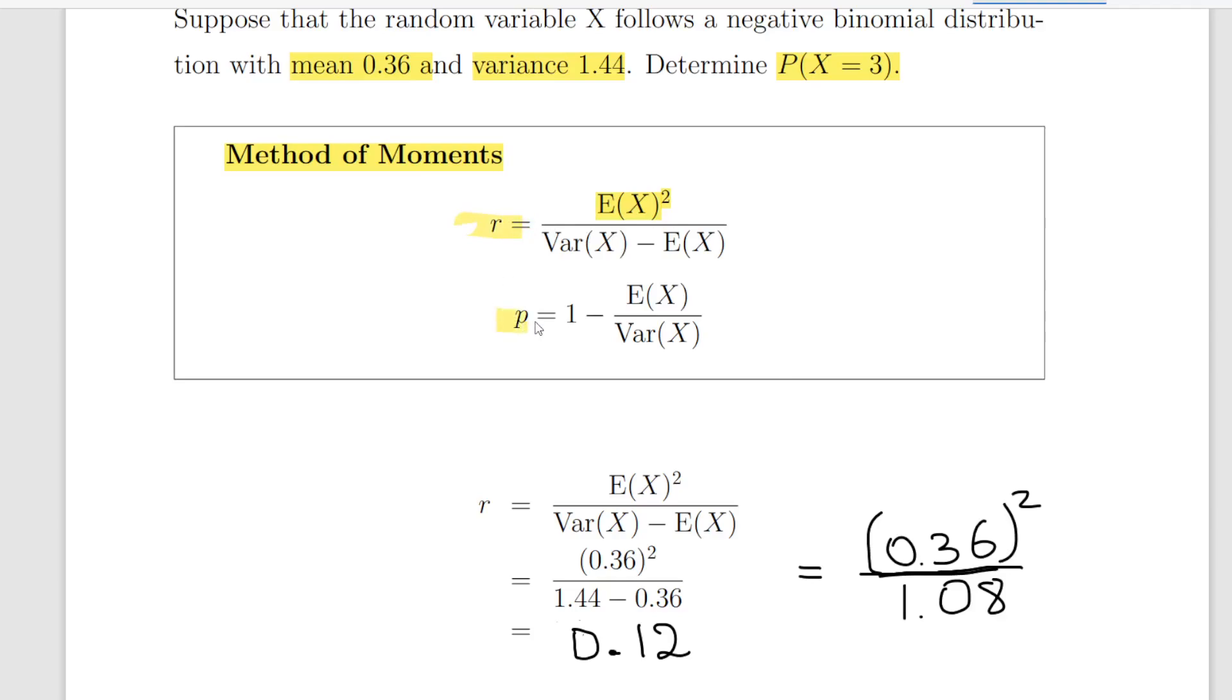We're also looking for p, the second parameter, which is the probability. And that can be evaluated using this expression here: 1 minus the expected value of X divided by the variance of X.